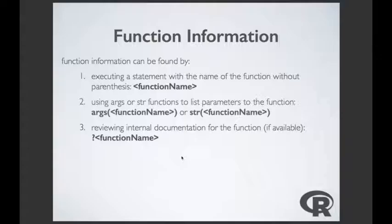If you want to find information about a function you've defined or a predefined one, you can type the function name without parentheses to learn more about that object. You can list the parameters using args(function_name). You can also use str() — the structure function — to learn more about it. And if you want detailed documentation, use ?function_name to see the documentation.